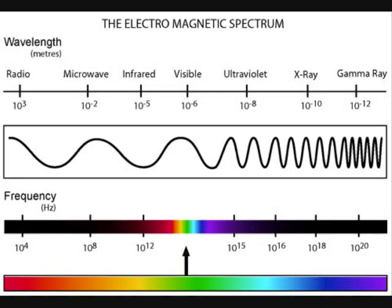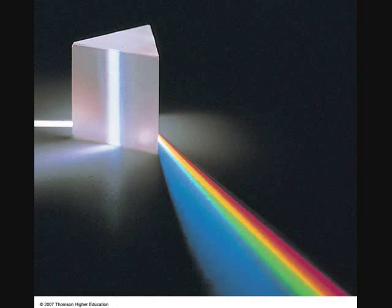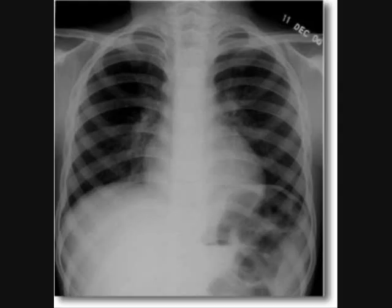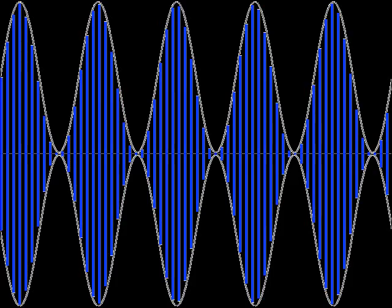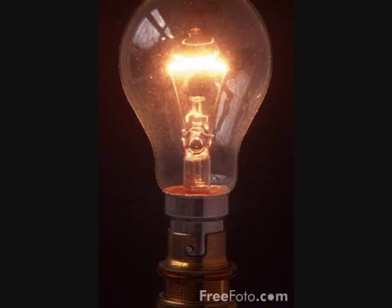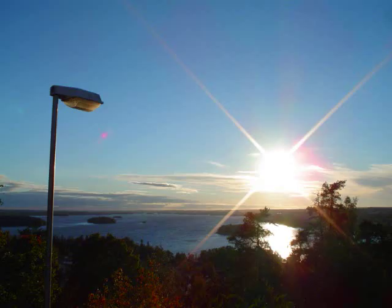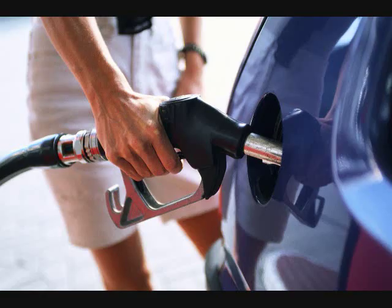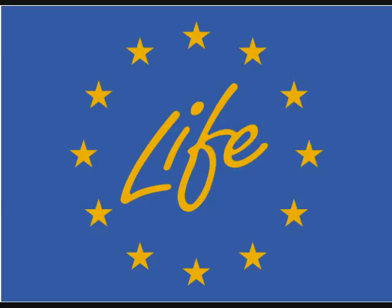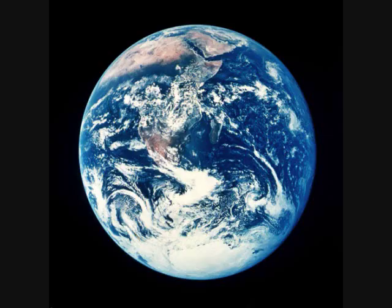Radiant energy is electromagnetic energy that travels in waves. Radiant energy includes visible light, x-rays, gamma rays, and radio waves. Light is one type of radiant energy. Sunshine is radiant energy, which provides the fuel and warmth that make life on Earth possible.